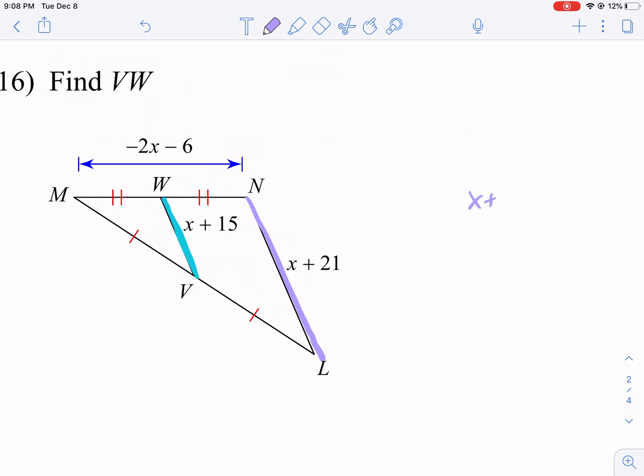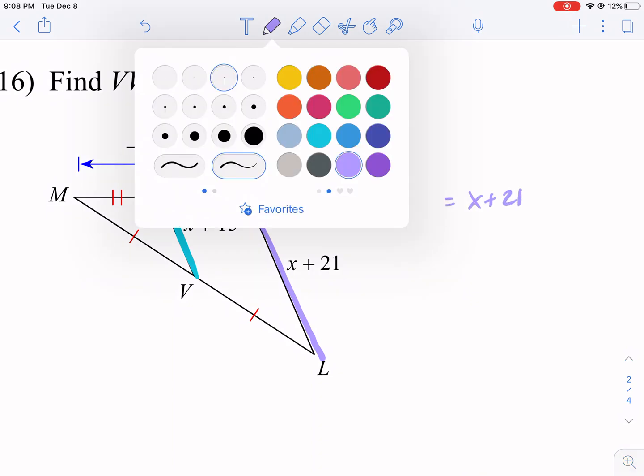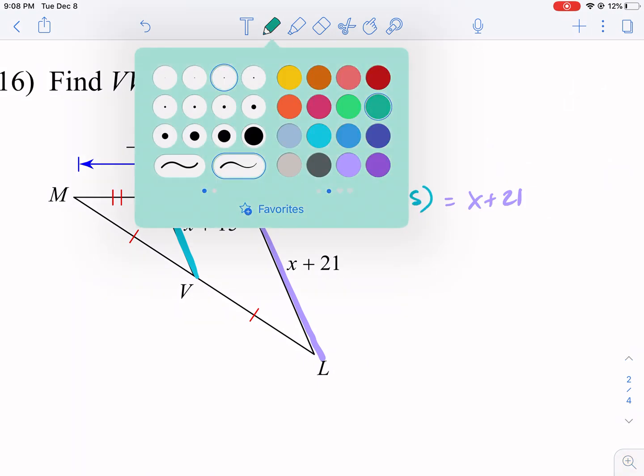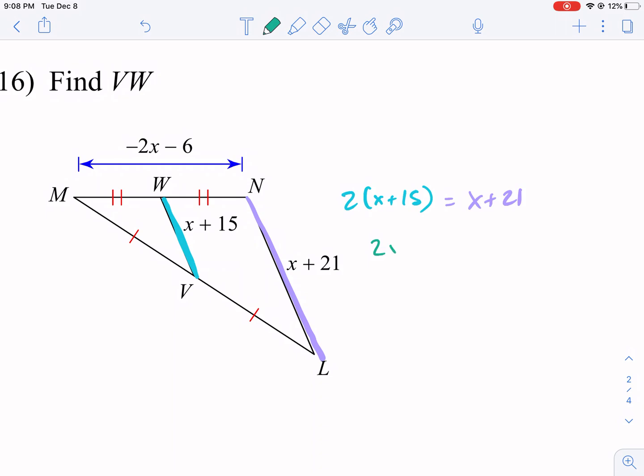So we're going to say x plus 21 equals, and then we have two times x plus 15. We're going to use our green to solve. So we have 2x plus 30 equals x plus 21. We're going to subtract x from both sides. Plus 30 equals 21. We're going to subtract 30 from both sides, and we get x equals negative nine. Again, do not circle this.